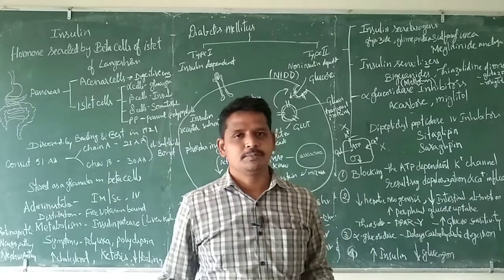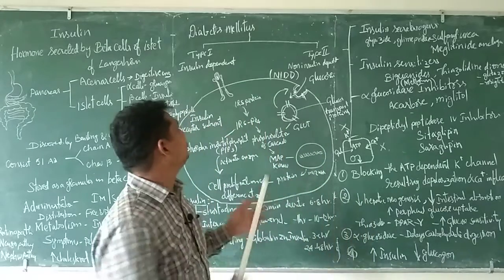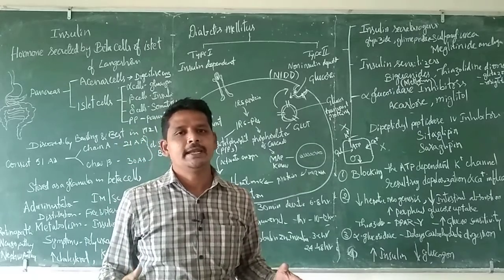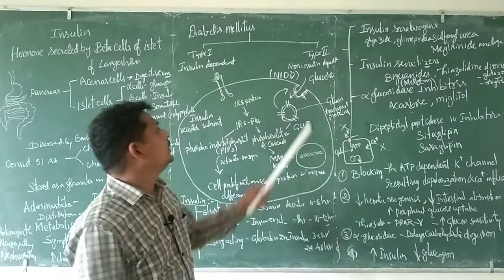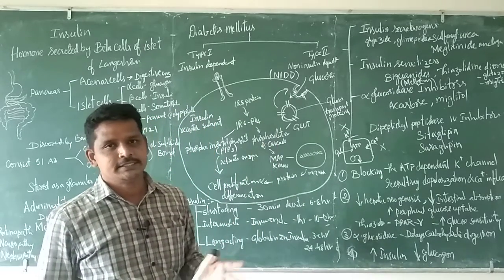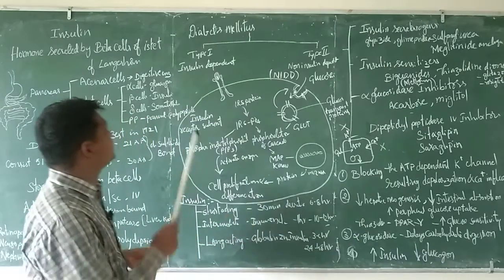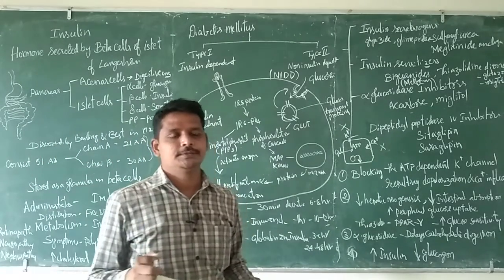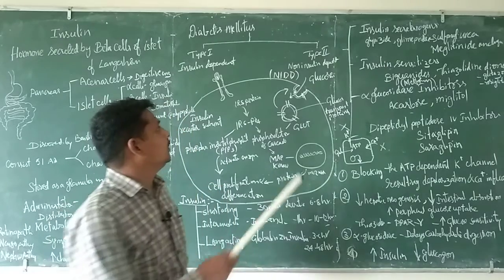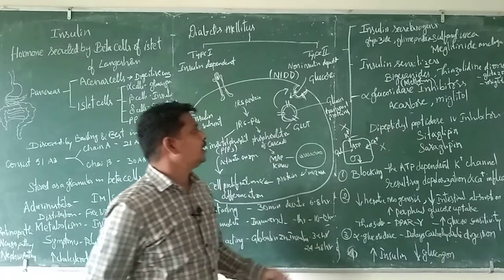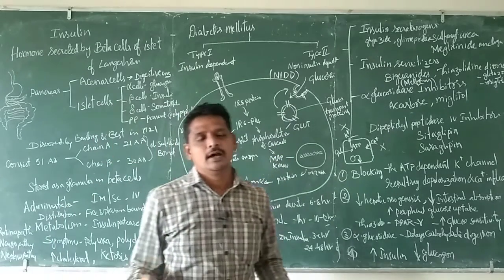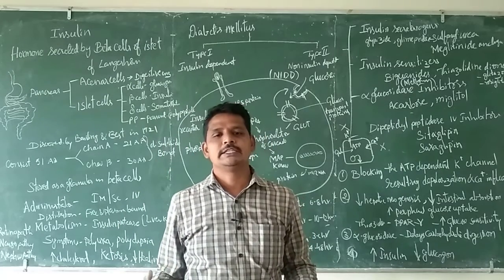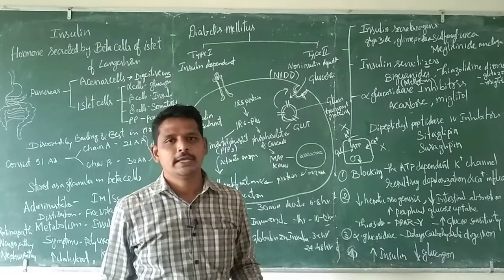Diabetes can be broadly categorized as type 1 and type 2. Type 1 is also called insulin-dependent diabetes and type 2 is non-insulin-dependent diabetes. For type 1, different types of insulin are used for treatment, whereas for type 2, various chemicals are used that stimulate or increase the sensitivity of cells to insulin.